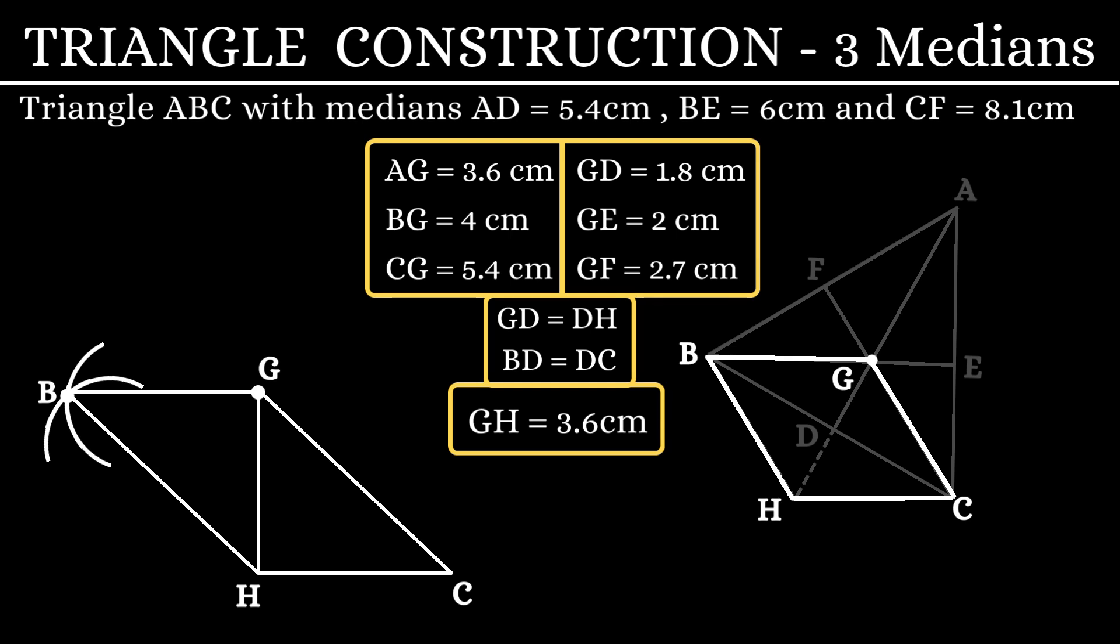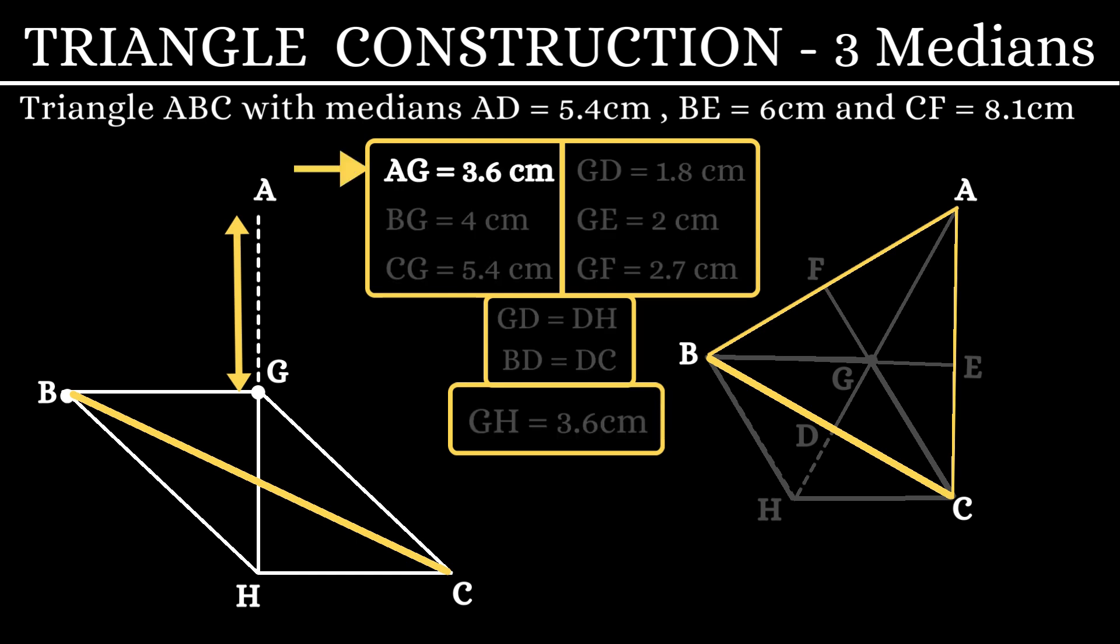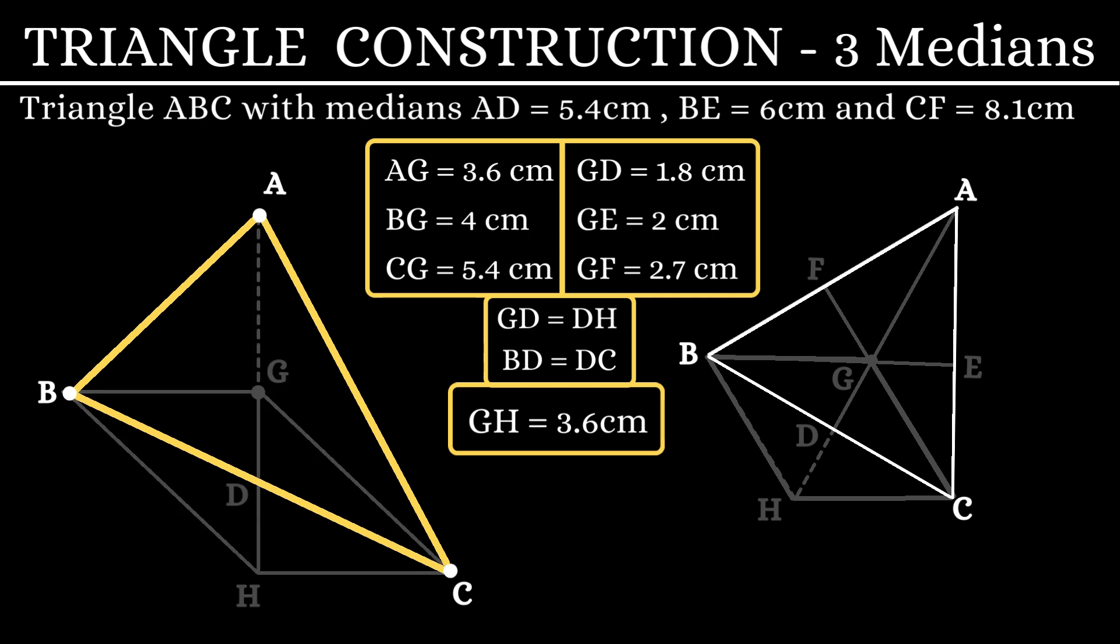Now, when we join BC we get one side of our required triangle. Now, listen carefully. Produce HG to a point A where AG is 3.6 cm. So we have median AD. Now let us join AB and AC. We now have the required triangle ABC.